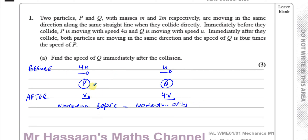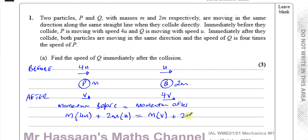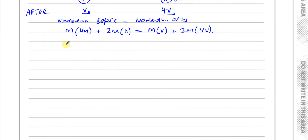The momentum before the collision: the mass of P is M and the mass of Q is 2M. So before the collision you have M times 4U plus 2M times U. And after the collision you have M times V plus 2M times 4V. Simplifying that gives us 4MU plus 2MU equals MV plus 8MV.